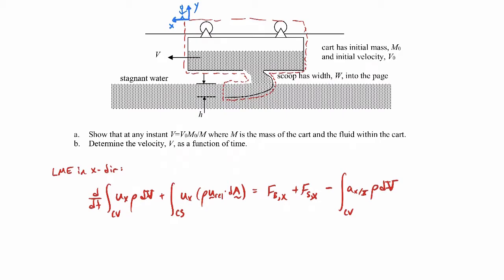Let's evaluate the various terms. The body force term is zero because gravity acts vertically and we only care about the x direction. For the acceleration term — this is the acceleration of our coordinate system relative to the ground. Since the coordinate system is fixed to the cart moving at velocity v, the acceleration is dv/dt, multiplied by the mass inside the control volume.